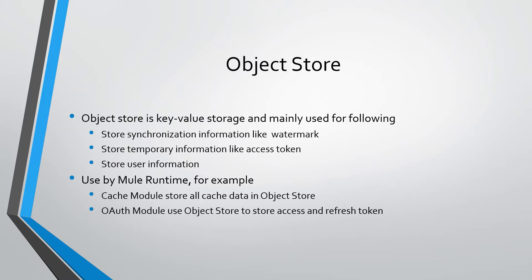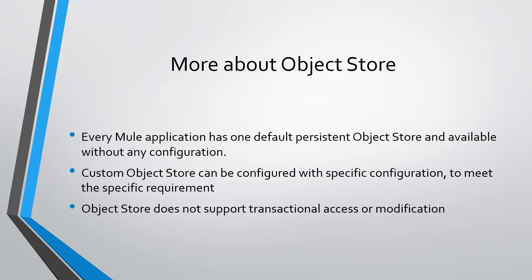Mule application also uses the object store for its own components. For example, the cache module stores cache data in object store. Both modules use the object store to store the access token and refresh token. Each Mule application has one default persistent object store available without any configuration, but we can create custom object stores with specific configurations based on our specific requirements and use cases.